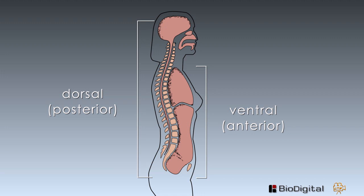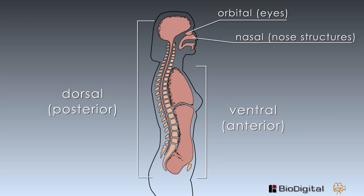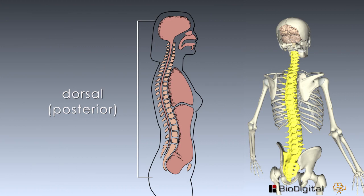Let's take a look at those first before we move on. The orbital cavity is for the eyes, the nasal cavity is for the nose structures, and the buccal or mouth cavity is for the structures contained in the mouth.